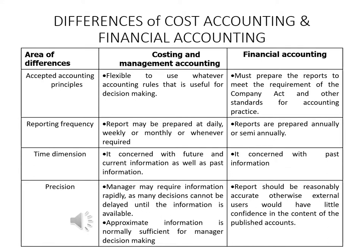On time dimension, Cost Accounting is concerned with past, current and future data, while Financial Accounting is only concerned with past data. Finally, in terms of precision, Cost Accounting accepts estimation, while Financial Accounting only accepts accurate information.